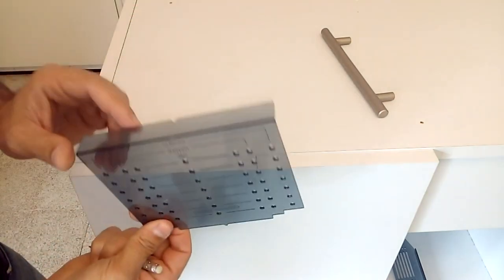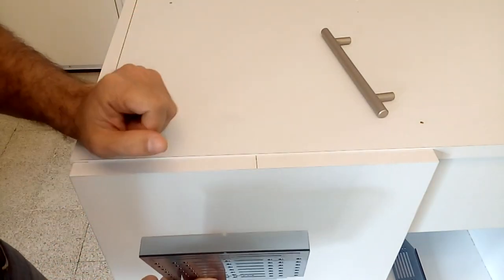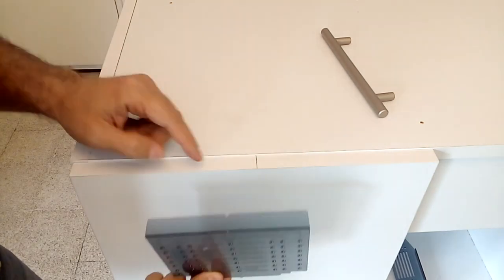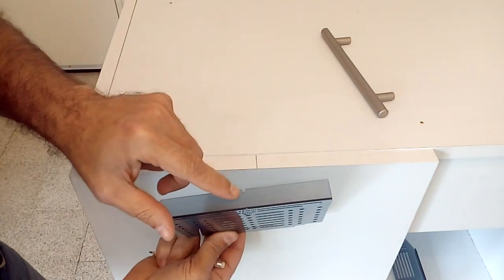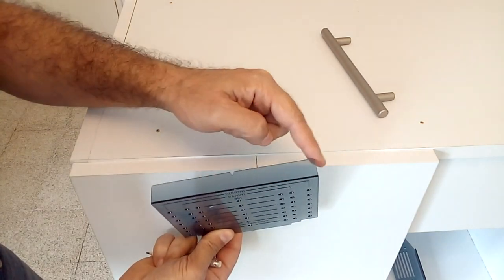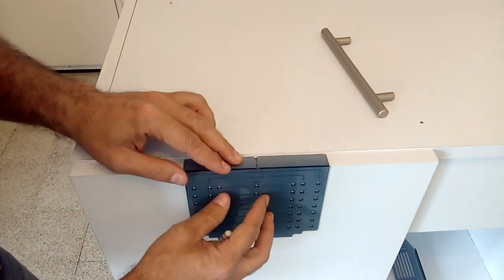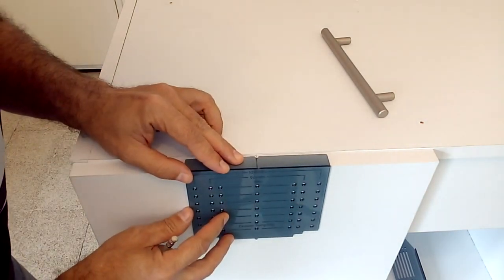Using this other template we are going to place this part on the line that we marked on the edge of the cabinet door. You can see that this template gives us many options to place one or two bolt handles at different distances from the edge.